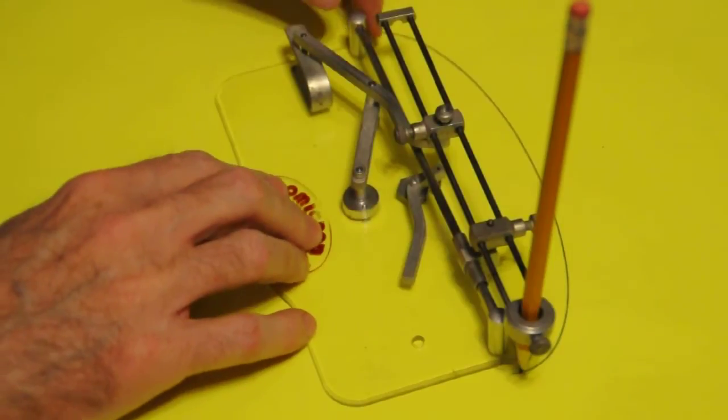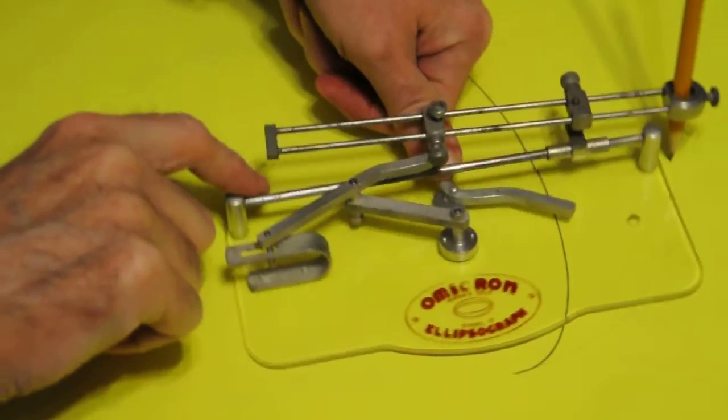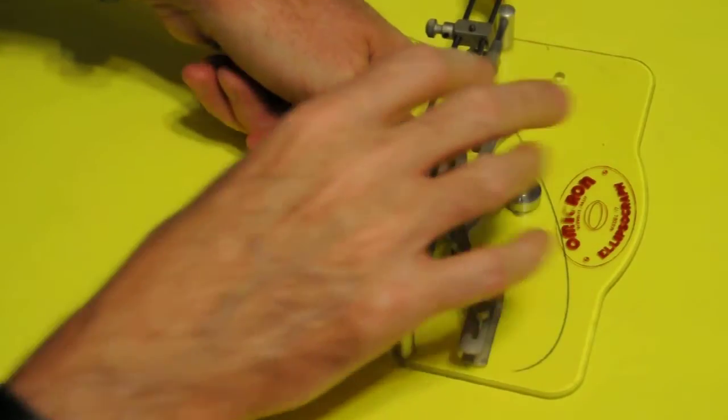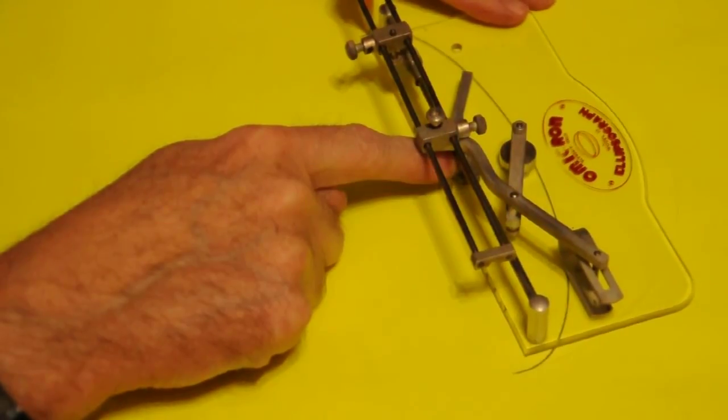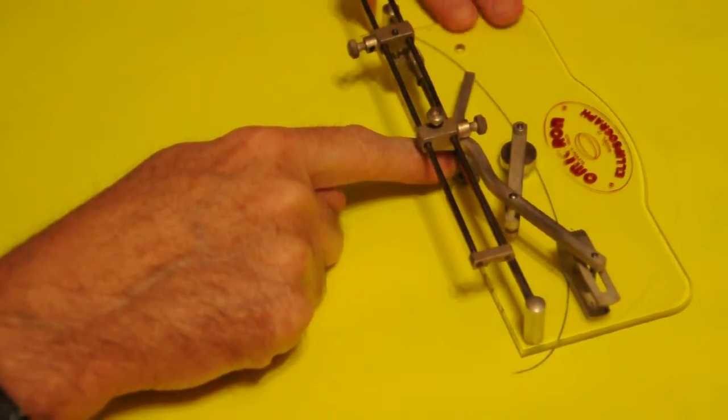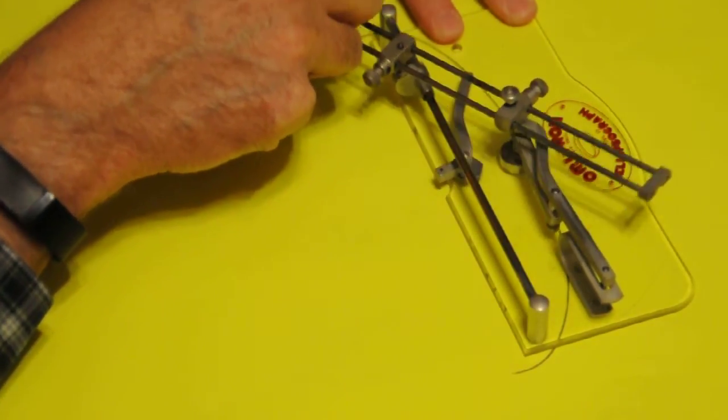What I need to do now is hold this thing down so that the pen is held in place and then rotate the whole thing 180 degrees. And now I should be able to create the other side of the ellipse.